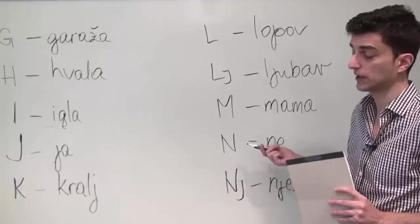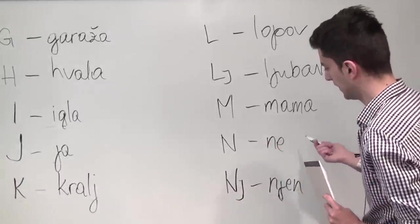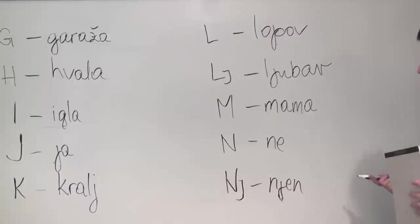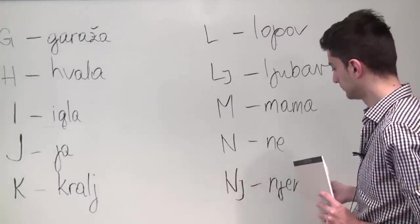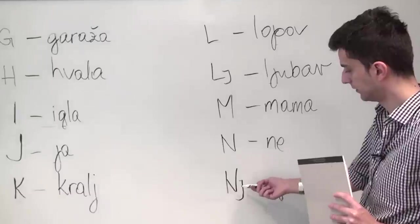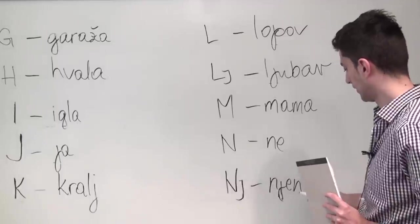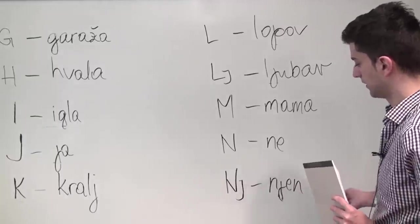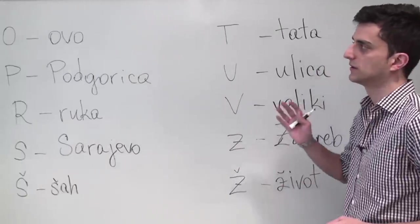Letter N is pronounced as N and you can hear in the word ne, and we come to our third compound letter which is Nj, so N and J. It's one letter, one sound, and you can hear it in the word njih.